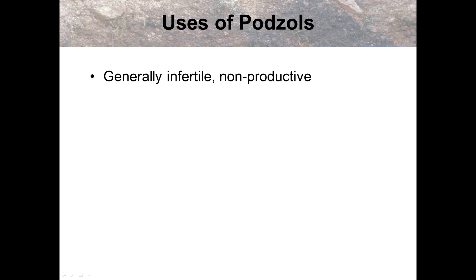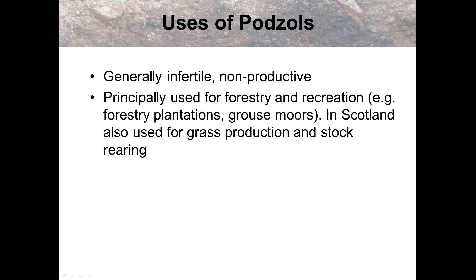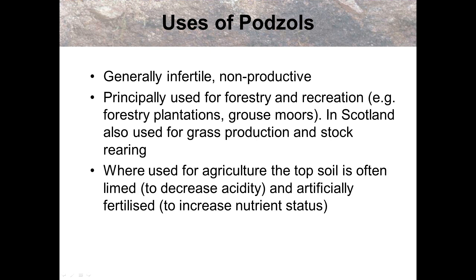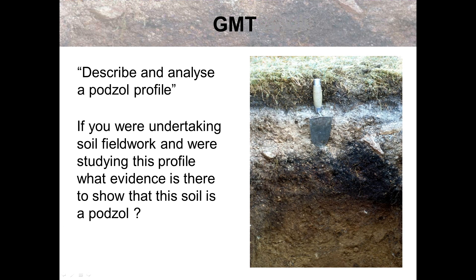So, what are they used for? They're generally infertile and non-productive, used for forestry — that's where we get the pine needles from — because the soil's not great and you can't grow many crops on it. Hill sheep farming, particularly in the Cairngorms, is the reason for that land use. If it is used for agriculture, it has to be limed and a lot of fertiliser has to be used every single time, because the soil is so poor in terms of fertility. There's an example question: describe and explain a podzol profile, so can we take any from that and add it to our diagrams?